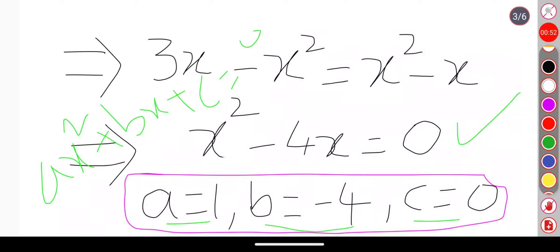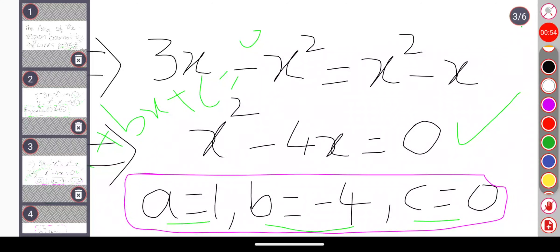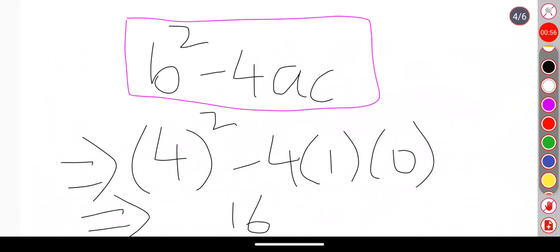Now we are finding the discriminant, that is b squared minus 4ac. So if we find b squared minus 4ac value, I am getting the value as 16 after substitution of a, b, and c values.